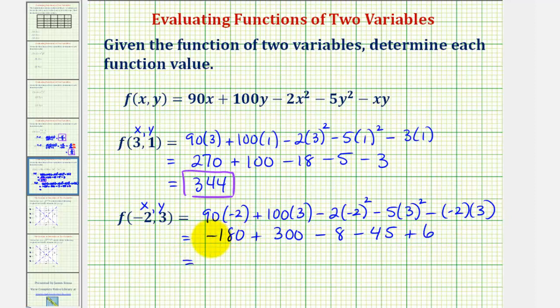So negative 180, plus 300, minus eight, minus 45, plus six, equals 73. So f of negative two comma three equals 73.